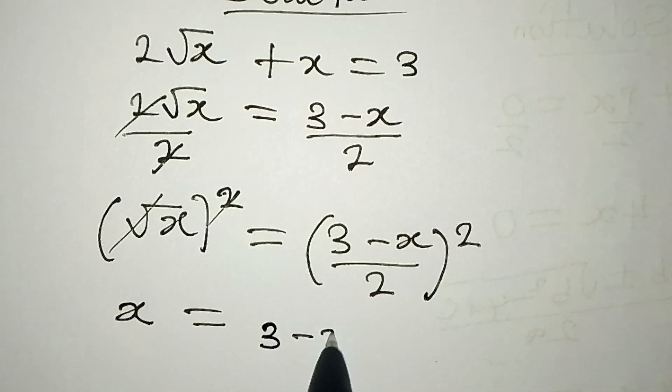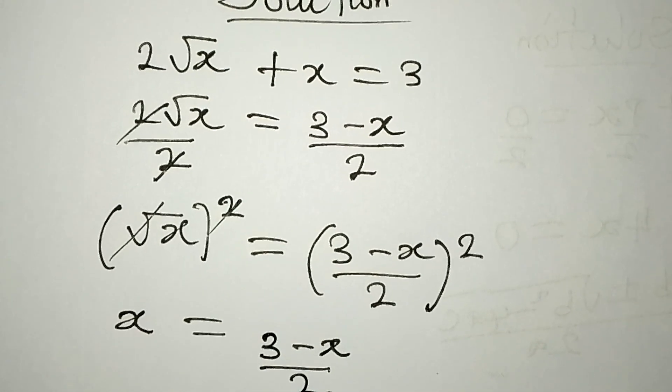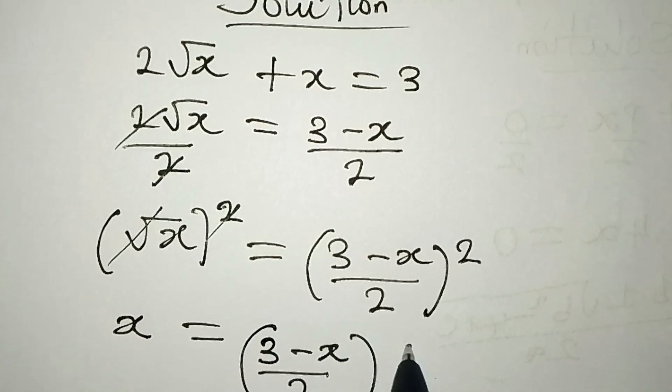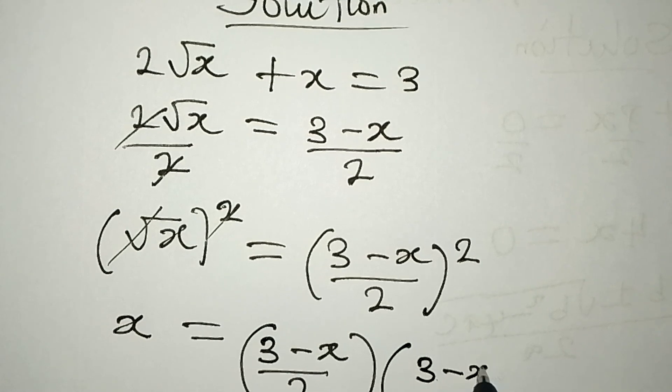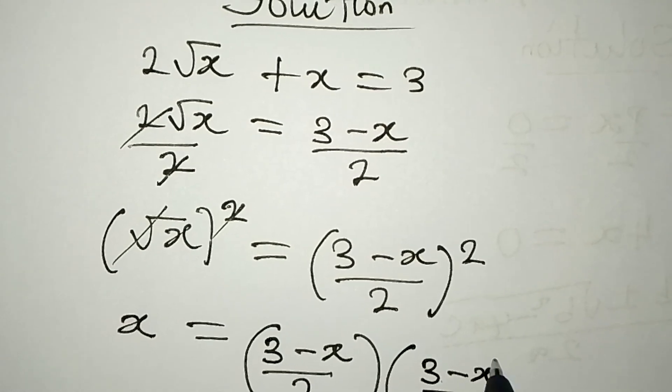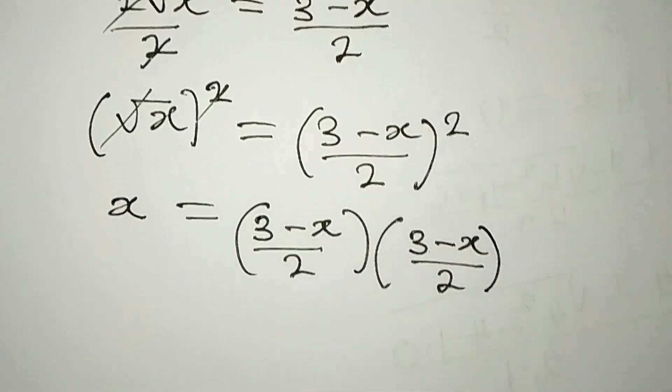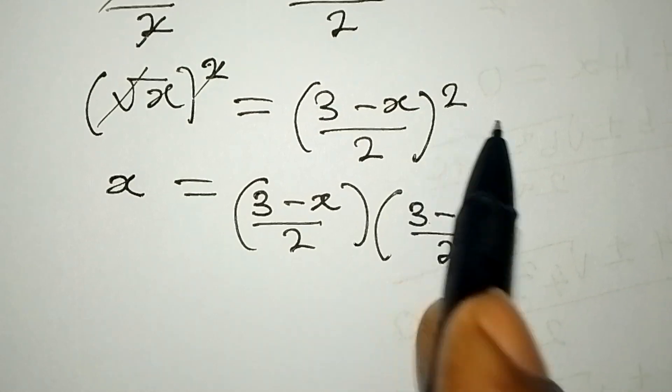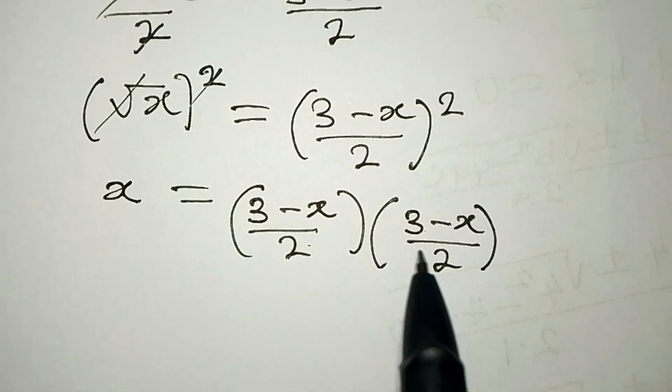((3 - x)/2) multiplied by ((3 - x)/2). This is what we have because we are squaring, so it means we should have it in both places.